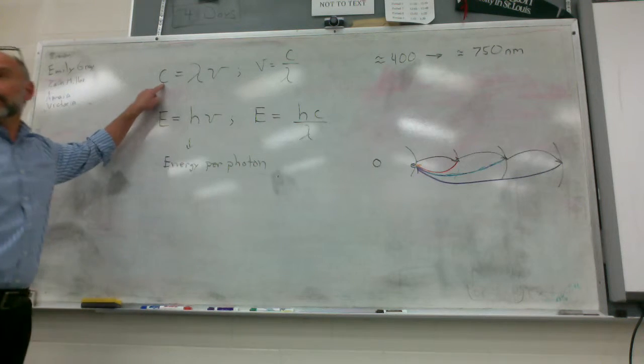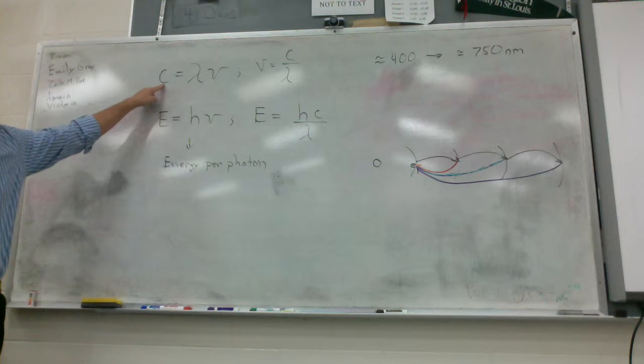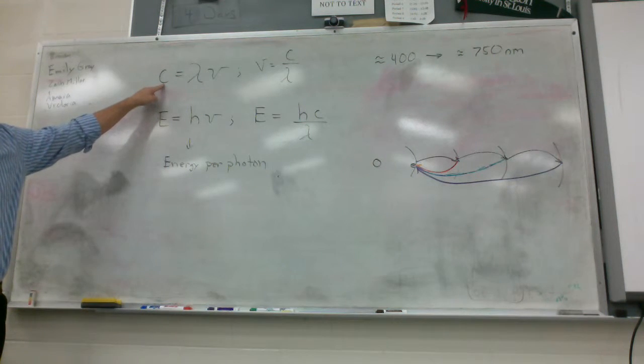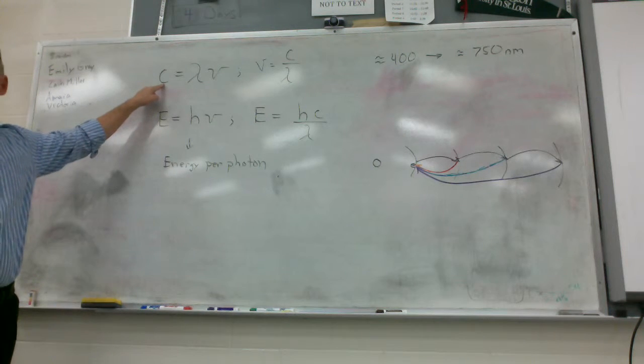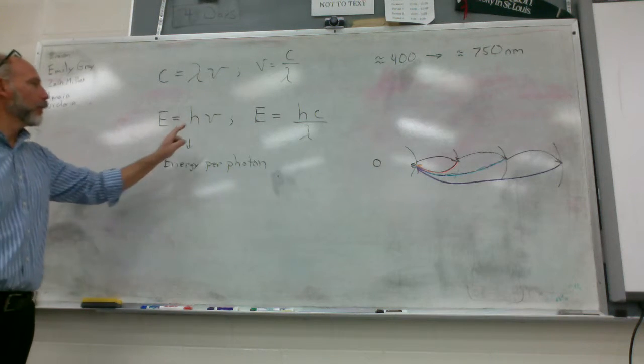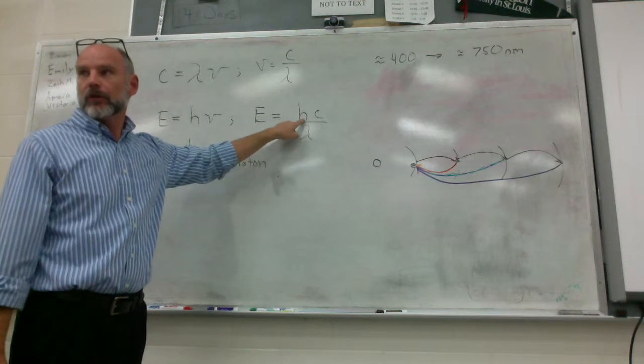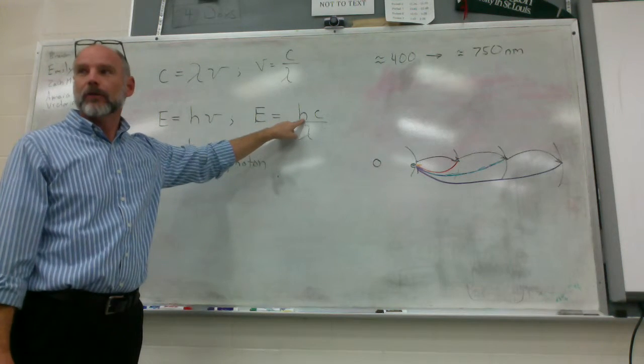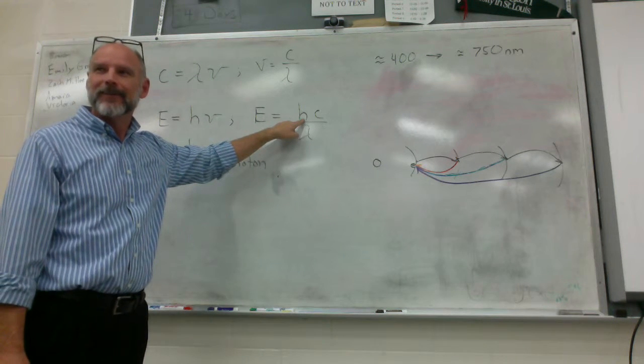Anyway, here's the thing. The visible spectrum goes from approximately 400 to approximately 750 nanometers. Now, do you remember me giving you a value for C? What was the value for C? Oh, it is a constant. What is the value of that constant? 2.9979 times 10 to the 8th meters per second.